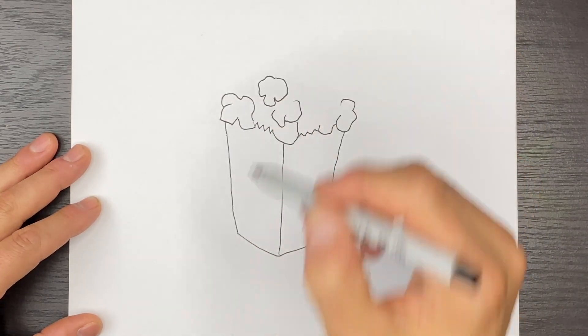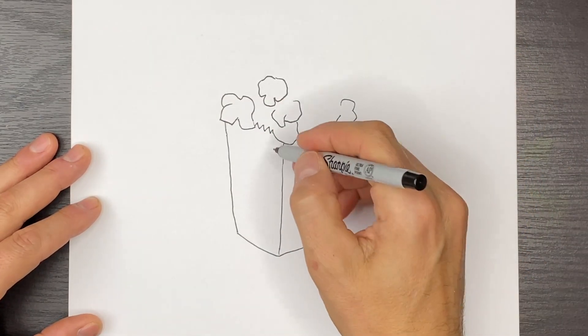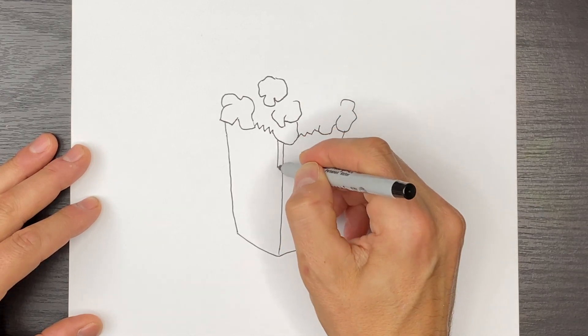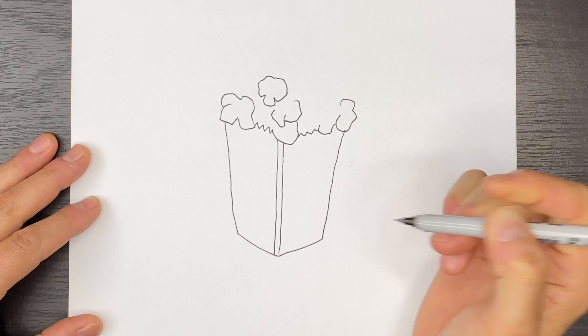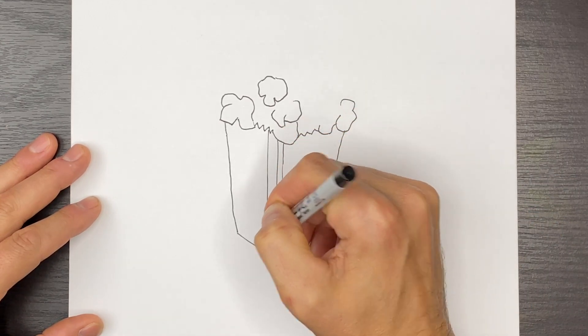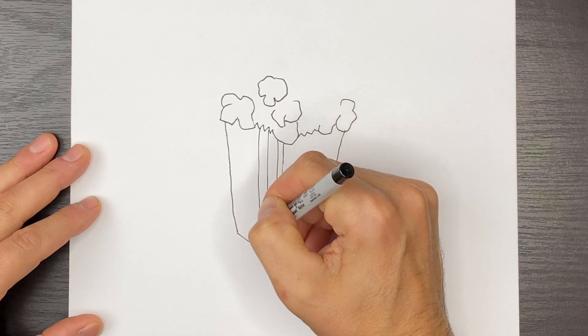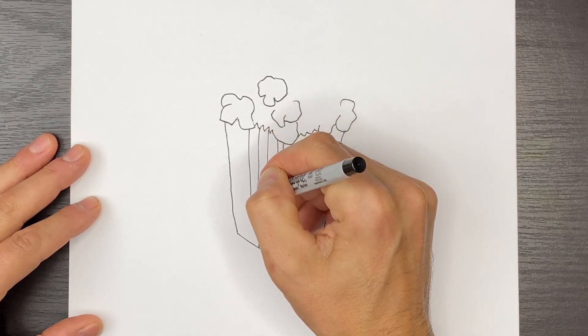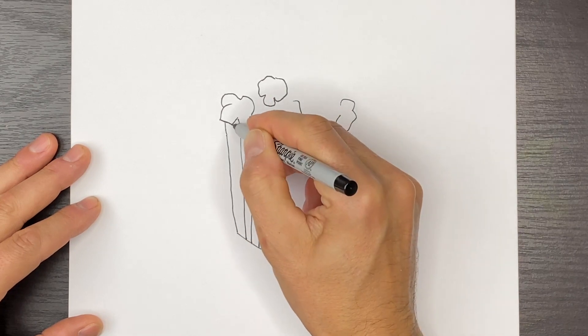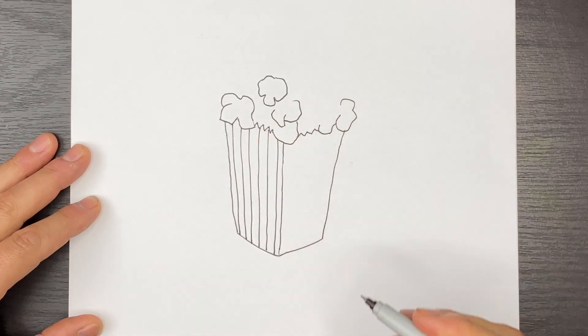Now, before I finish the rest of my popcorn, let's go back and finish some of these stripes on our popcorn box. So we're going to draw a line like this. And I'm going to draw a few more that come down like this. All right.